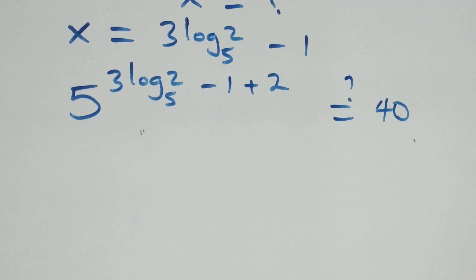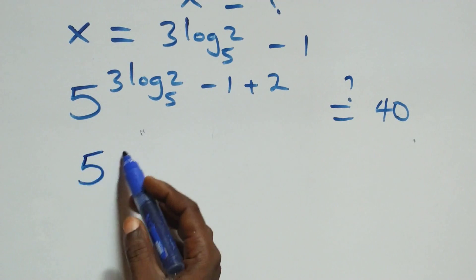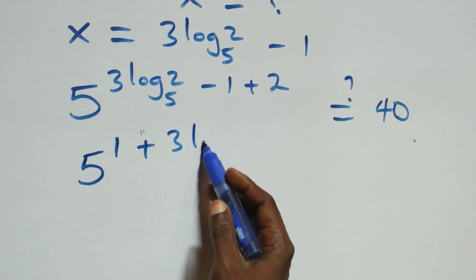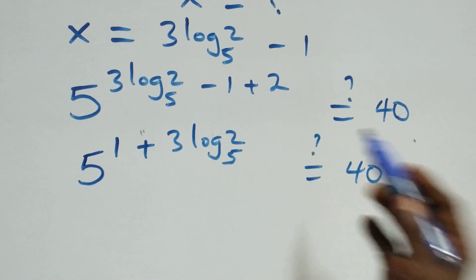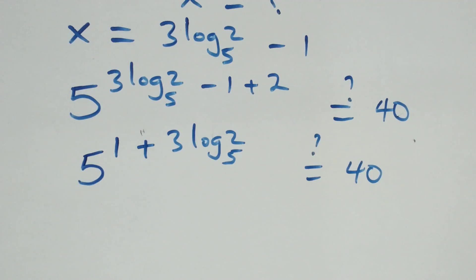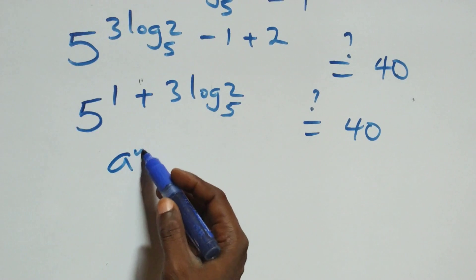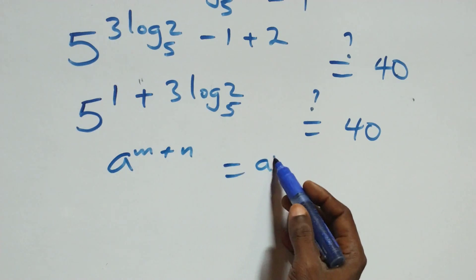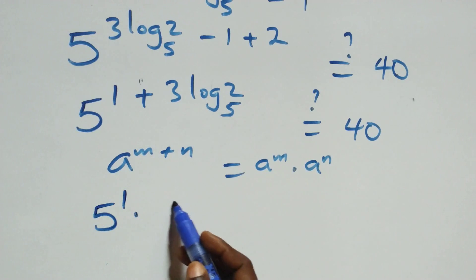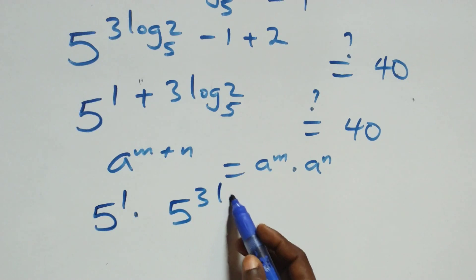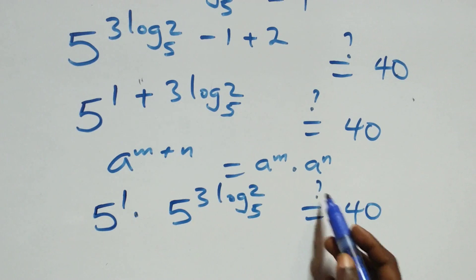Here, minus 1 plus 2 equals 1. So we have 5 raised to the power (1 plus 3 log₅2), which should equal 40. We apply the law of indices: a raised to power m plus n equals a raised to power m times a raised to power n. This becomes 5 raised to power 1, times 5 raised to power 3 log₅2, which should equal 40.